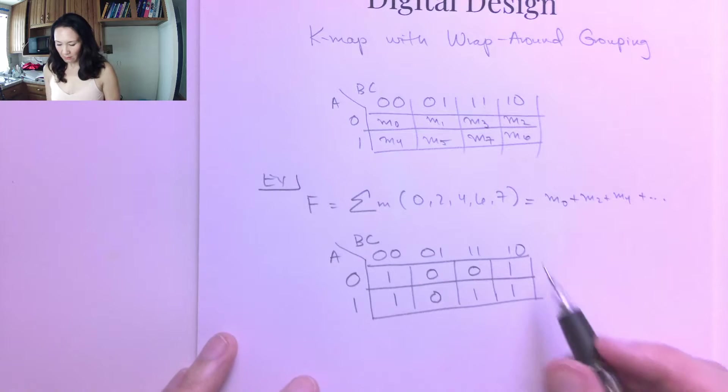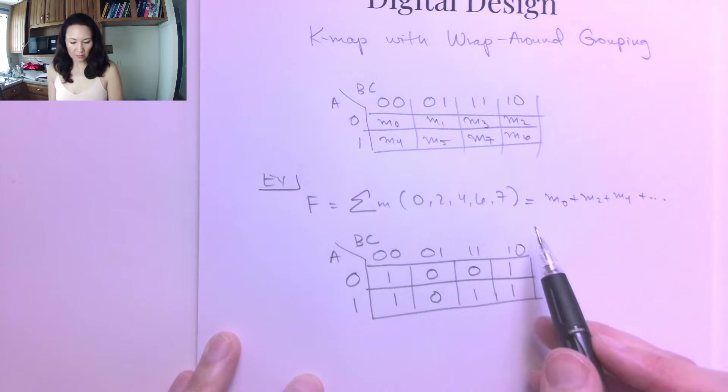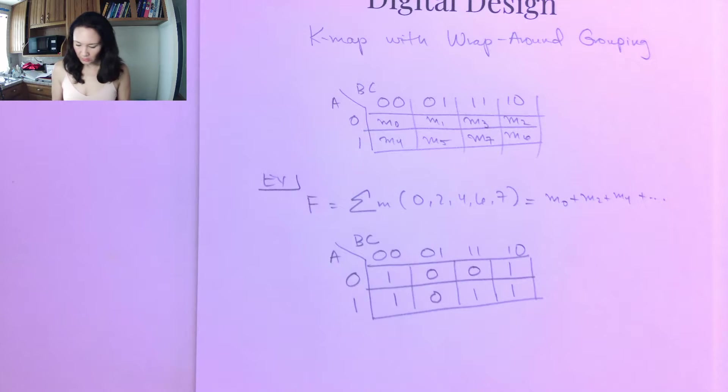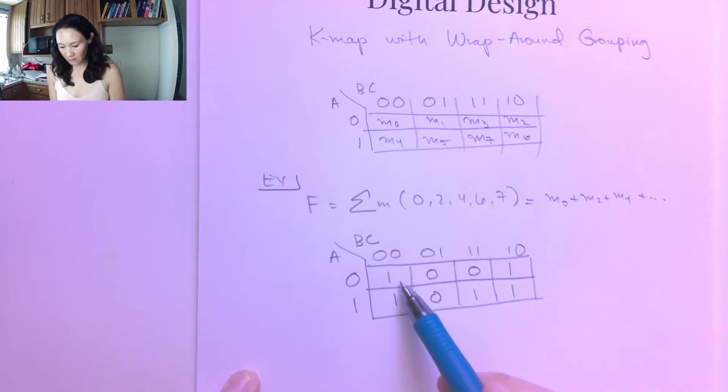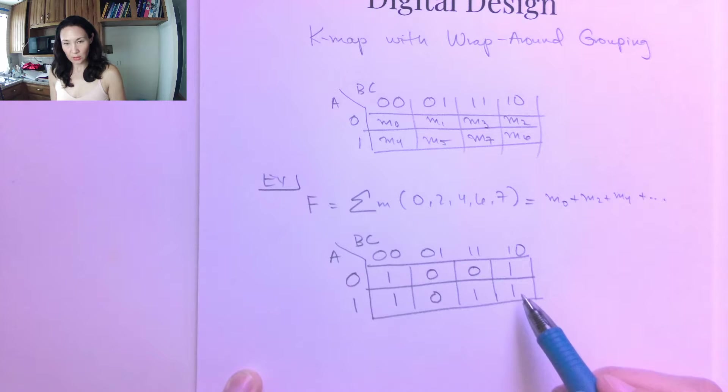So here's my Karnaugh map made from the minterm notation. So now I want to do my groupings. Here I wanted to show you the wraparound grouping. As you can see, I've got two bits together here and two bits together here. I could group these separately into two groups of two, but the more bits I can group together, the better my simplification is going to be. So if you see that a group of four exists, do the group of four over the groups of two.